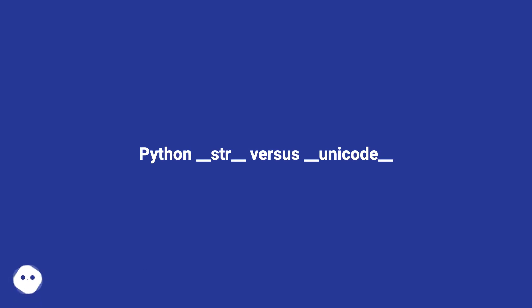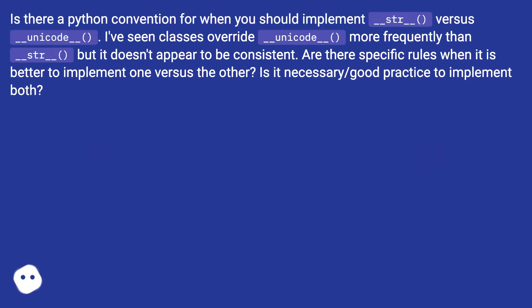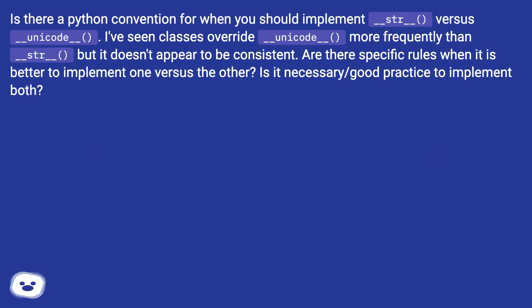Python __str__ vs __unicode__. Is there a Python convention for when you should implement __str__ vs __unicode__? I've seen classes override __unicode__ more frequently than __str__, but it doesn't appear to be consistent. Are there specific rules for when it is better to implement one versus the other? Is it necessary or good practice to implement both?